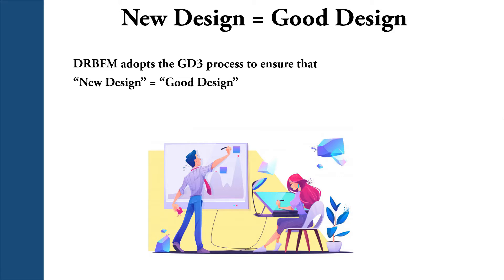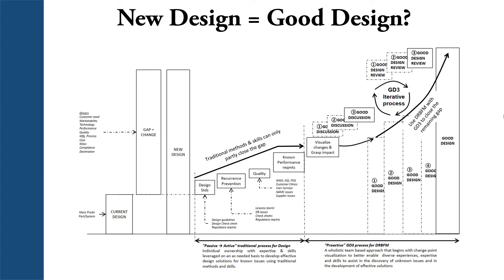Moving from new design to good design, this flowchart shows how we can go from our current design to a good design. The current design will undergo change, that change produces a gap, and eventually we land on our new design. Traditional methods and skills will only fill a partial gap — the difference between the old and new design. Traditional methods will solve part of the problem; you can deliver a new design, but it's not necessarily a good design.